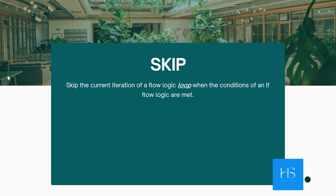First, the introduction to Skip. Skip actually skips the current iteration of the flow logic loop when the condition of an if logic is met. So if we have written a condition in a for loop or do-until loop, you can skip that particular iteration. Skip can only be used in these two kinds of loops.